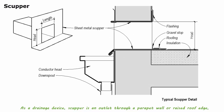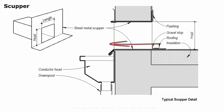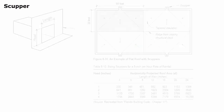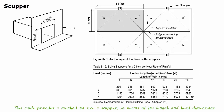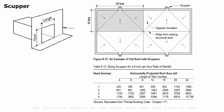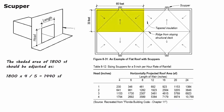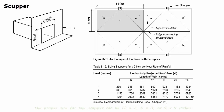As a drainage device, a scupper is an outlet through a parapet wall or raised roof edge, typically lined with a sheet metal sleeve, allowing water runoff to leave the roof through a downspout attached to the surface of the building. This table provides a method to size the scupper in terms of its length and head dimensions, based on a 5-inch-per-hour rainfall rate; the data can be adjusted for any other rainfall rate. For example, if the building is in an area with a 4-inch-per-hour rainfall rate, the shaded area of 1,800 square feet is adjusted to 1,800 times 4 divided by 5, which equals 1,440 square feet. According to the table, the proper scupper size can be 12 by 2, 6 by 3, or 4 by 4 inches.